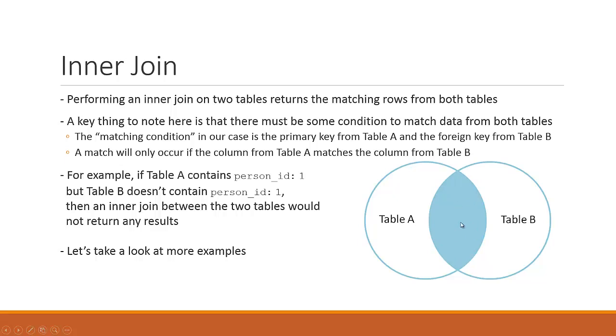So the key thing to note here is that there must be some condition to match data from both of those tables. This is the matching data based on some condition. We don't know based on this diagram what the condition is, but we just know that there is some matching data between table A and table B. The matching condition in our case is the primary key from table A and the foreign key, which is table A's primary key, inside of table B. We've talked about this already. We know what primary keys and foreign keys are. We know about relationships and we know about how relationships are established inside of SQL and databases using foreign keys. So a match will only occur if the column from table A matches the column from table B.